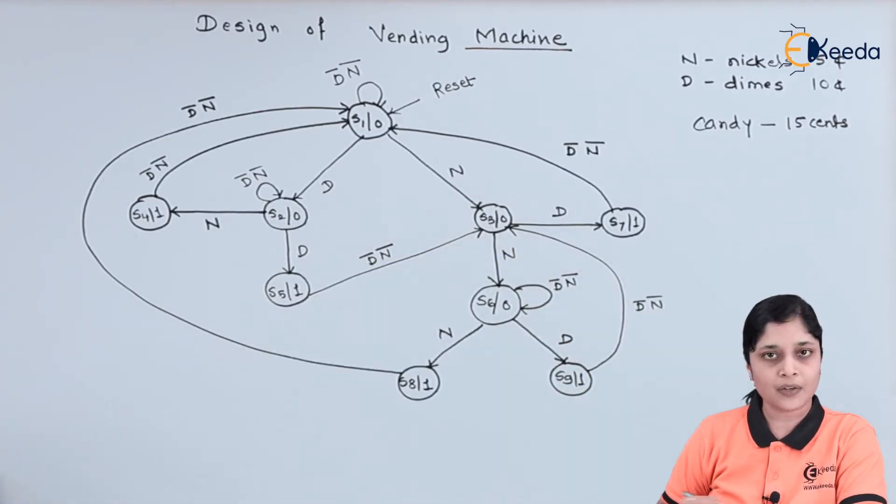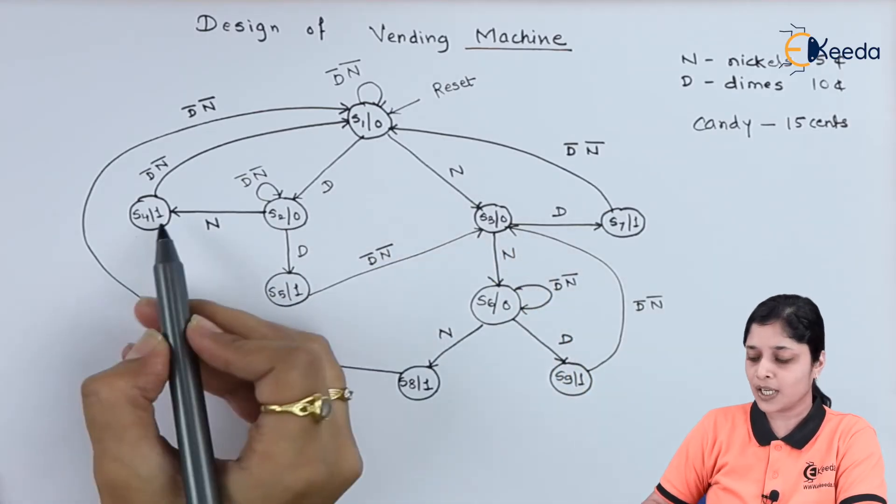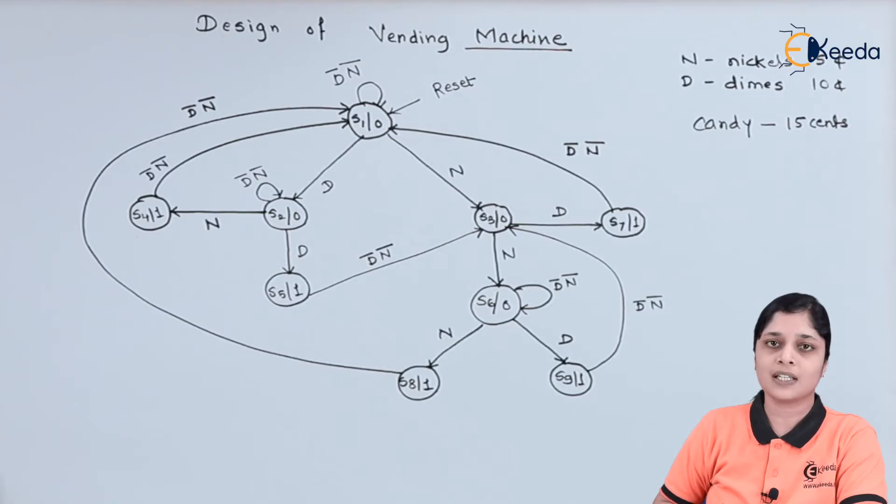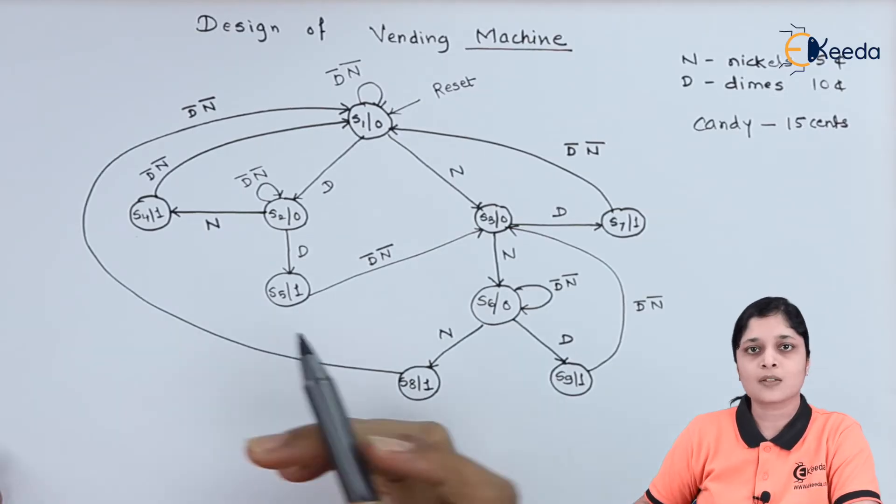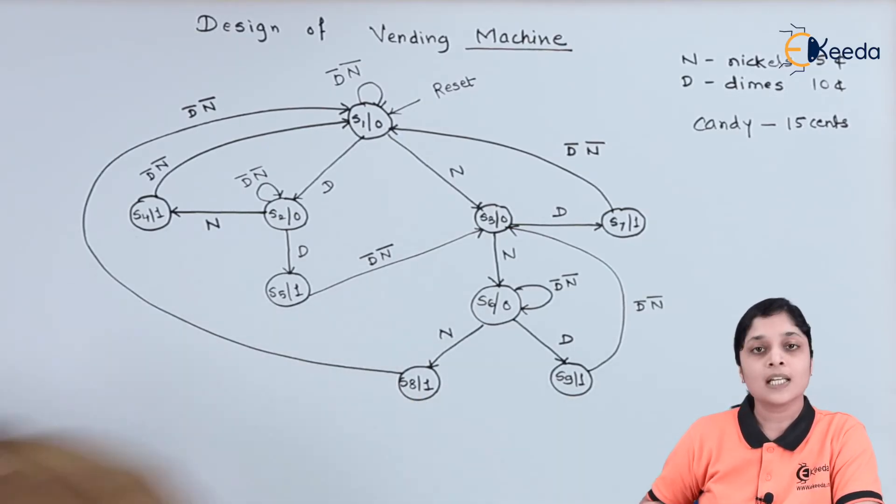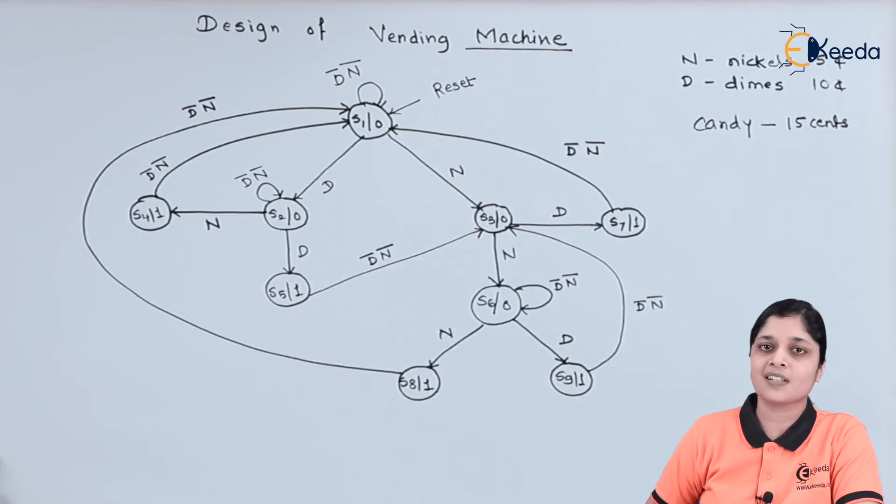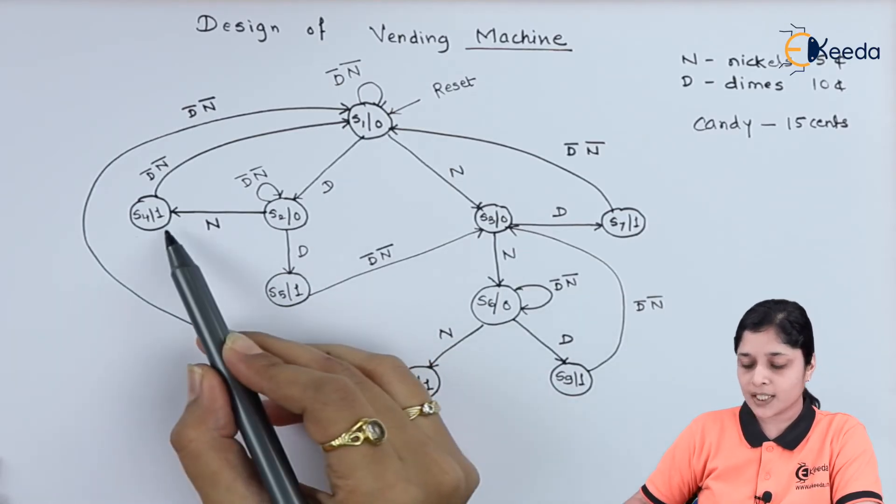10 plus 5 gives you 15 cents. At S4, the customer gets its candy. In state S4, customer has deposited sufficient money to get the candy.